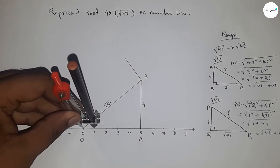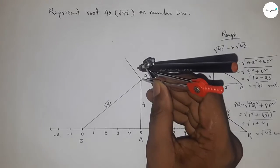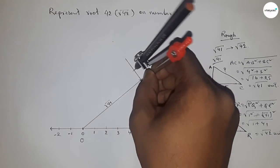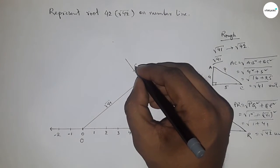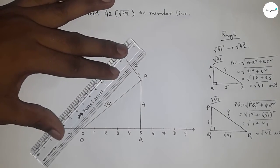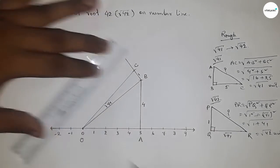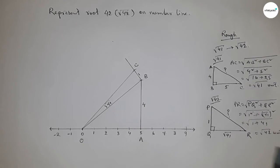Now taking one unit length. So taking any length between any two numbers and putting the compass here and cut here. So this is C point and this is 1 unit length. Now joining this. Okay, so from this we can say that OC equals root 42 unit.